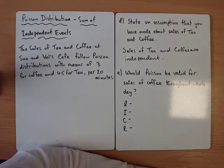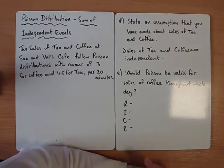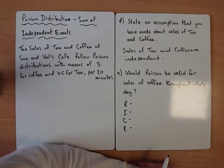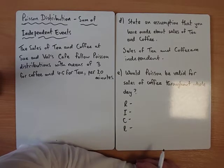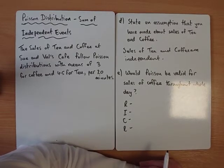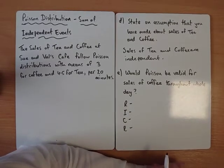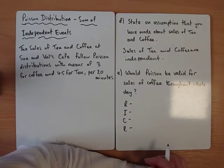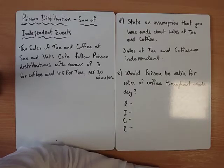And there's probably an argument for quite a few of these in real life as to why it wouldn't really be valid. Would coffee sales be independent? Maybe if someone turns up with a friend and they both buy a coffee together, or one person influences someone else, it's not independent, is it? Maybe not random. There might be a promotion on coffee sales, or it could be certain times of the day where more coffee is sold. Is the sale of coffee limitless?